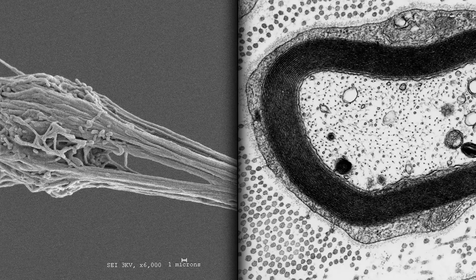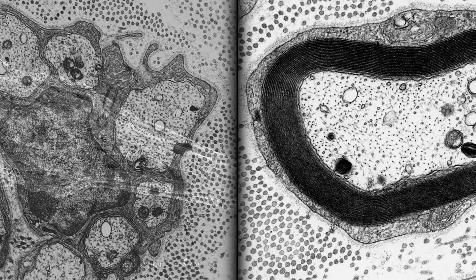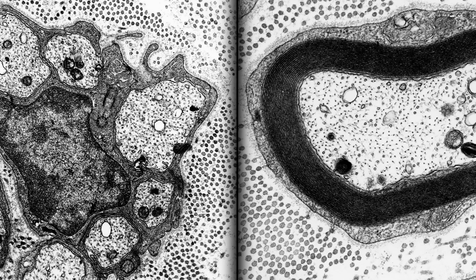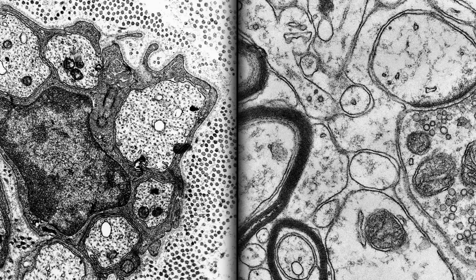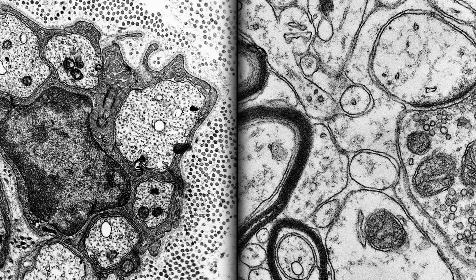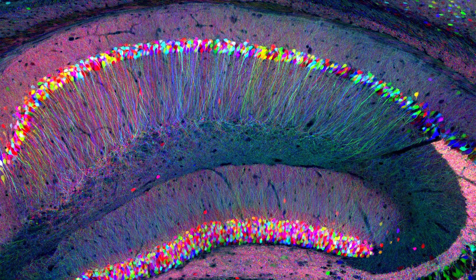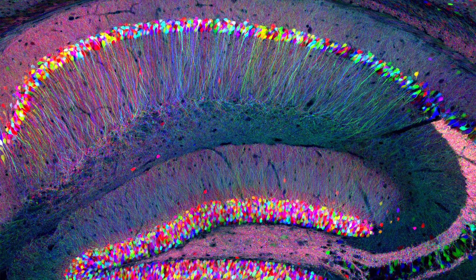Electron microscopes give incredible detail, but you can't label different structures with different colors, so you can't discern the 3D configuration of molecules and connections.